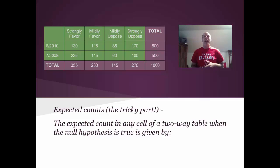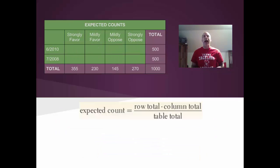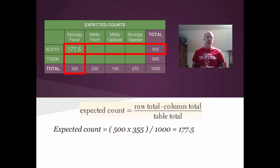Here's how we do the expected counts. The expected count for any cell in the two-way table, when the null hypothesis is true, is given by: you take the row total times the column total, divide it by the table total, the grand total. So let's put this into action. So here's my expected count table. Let's focus in on that strongly favored in 2010, the cell on the top left here. I'm going to take the column total, which is 355, multiply it by the row total, which is 500, and divide it by the grand total, which is 1,000. That comes out as 177.5.